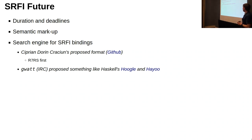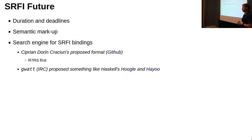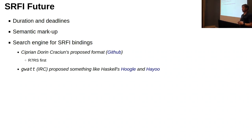Another ambition is to have a search engine for SRFI bindings. Cyprian Kraken has proposed a JSON or S-expression format to encode APIs, documentation, and data about them, and has gone through R7RS small and encoded everything that way. I'm hoping he'll do that for SRFIs as well — that would make it easy to create a nice search engine. Someone on IRC also wants something like Hoogle or Hayoo, which the Haskell community has, and I'd love to see that too. If anyone would like to volunteer, I'd really appreciate it.